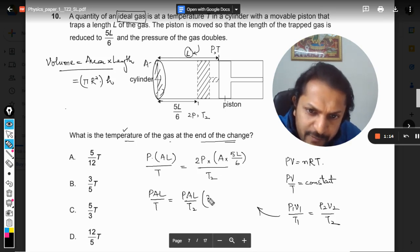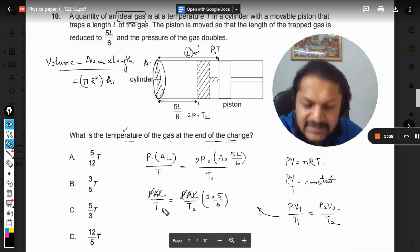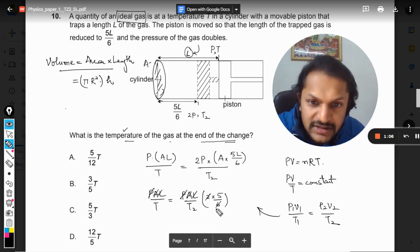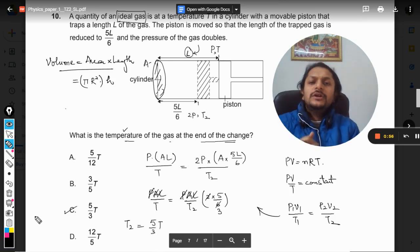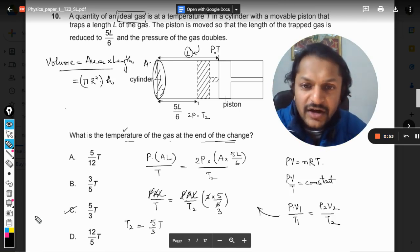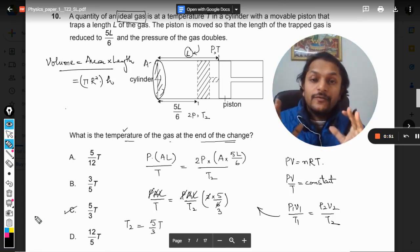So now PAL, PALs they have been cancelled out. So this is 3. And from here I can say that T2 and T are cross-multiplied, it will be 5 by 3 into T. And so that is why C is going to be the correct answer. So this is how we do this.